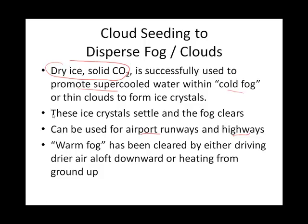Alternatively, for warm fog, we have a couple of options. One is to heat the air — warm air can hold more moisture, so heating it lowers the relative humidity and the fog will clear. Another thing we can do is bring down dry air from above, which will also lower the relative humidity. These are a couple of ways we try to manipulate our atmosphere to deal with fog.